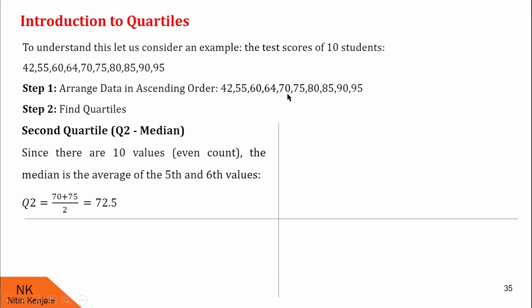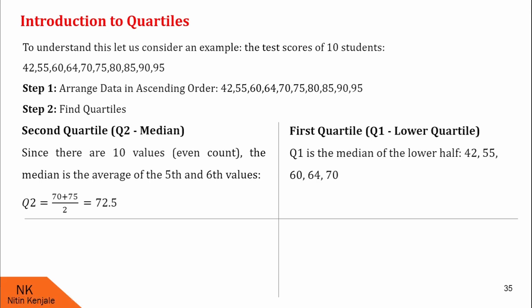Below quartile two, we have the lower half of the data, and we will find its median — that median is quartile one. Quartile one is the median of the lower half: the data values 42, 55, 60, 64, and 70. The median of this data is 60. Therefore Q1 is 60.